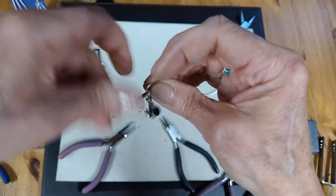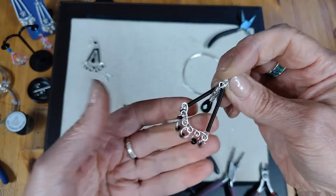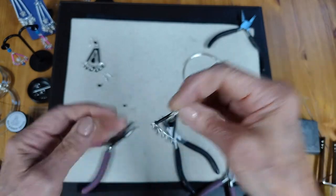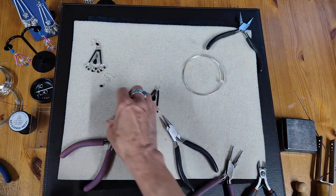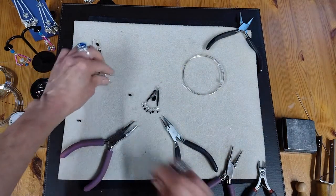So there we have that lovely movement at the end of the earring. And again, you could make that into a pendant or handbag charm or anything you want. And then all we have to do is connect it to an ear wire.